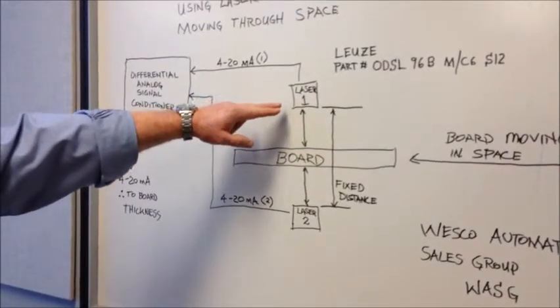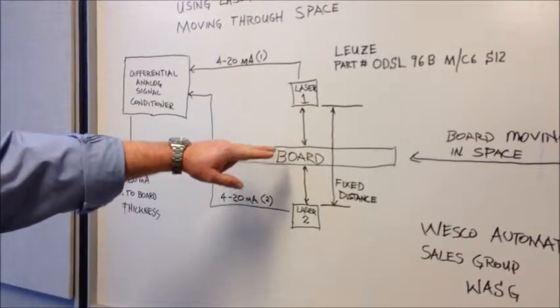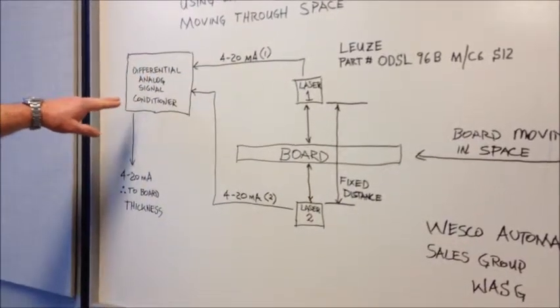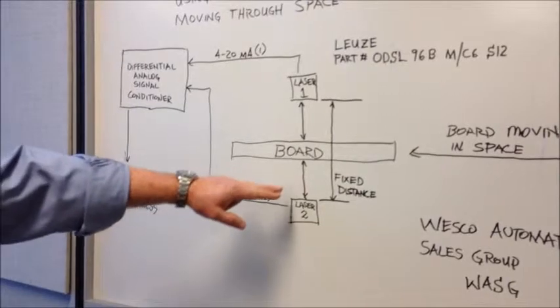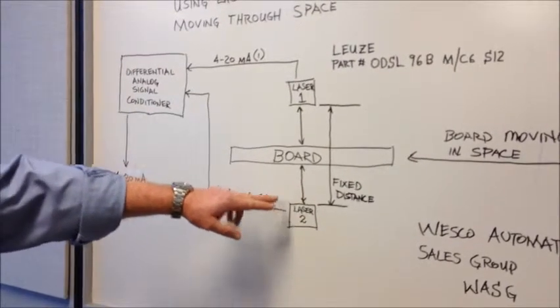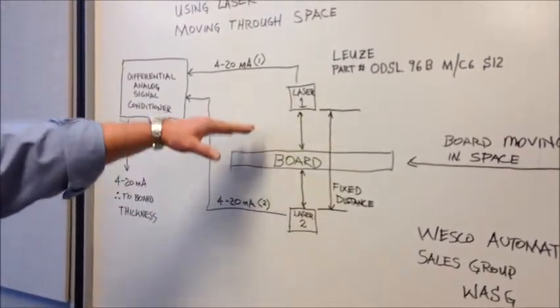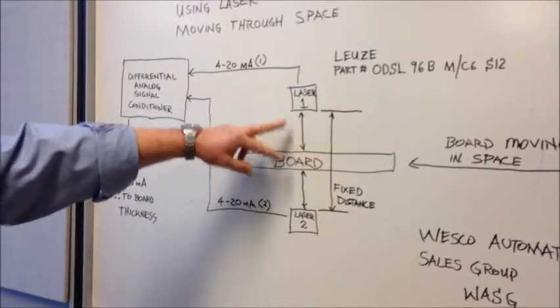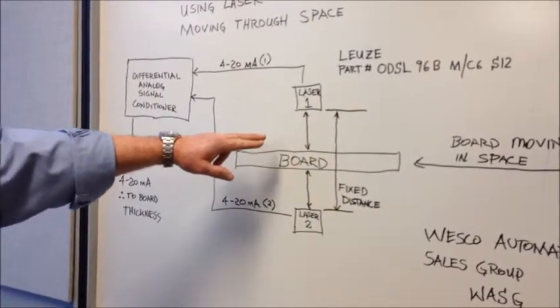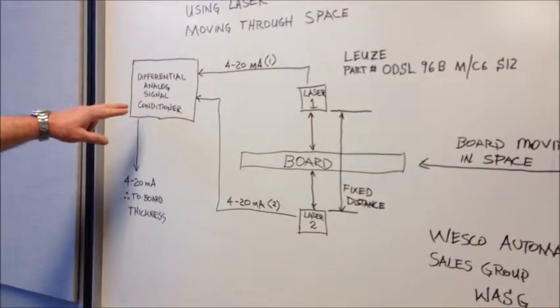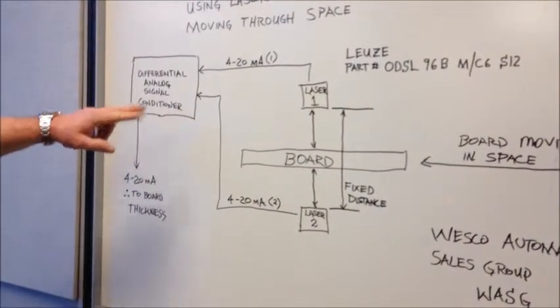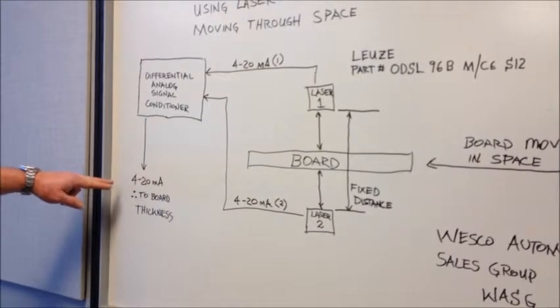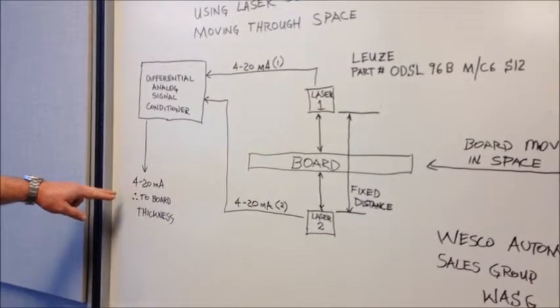Each sensor will sense the distance to one side of the board and generate a 4 to 20 milliamp signal back to a signal conditioner. If the board moves up or down in space, it doesn't really matter. This one will read a longer distance and this one will read a correspondingly shorter distance. However, the signal conditioner will take the difference between those two values and send out a single 4 to 20 milliamp signal proportional to board thickness.